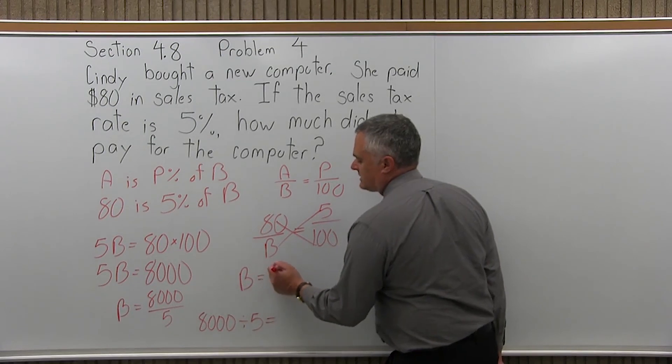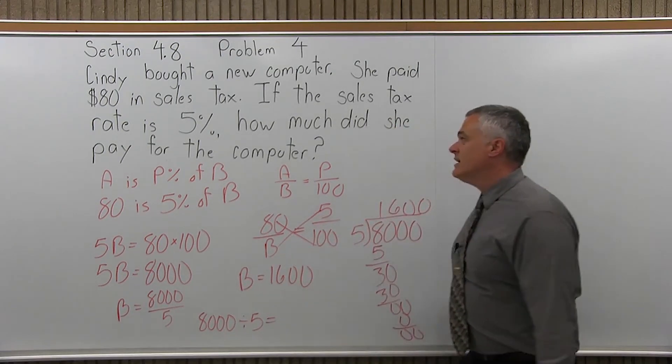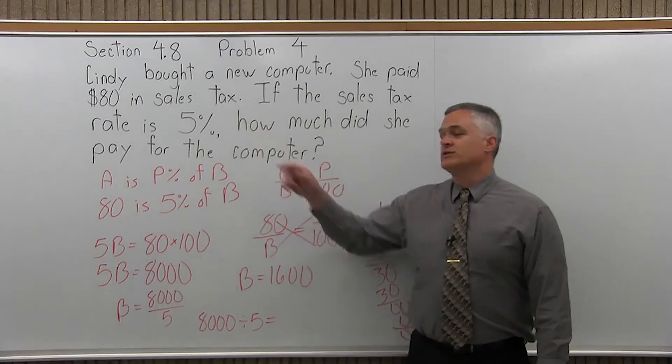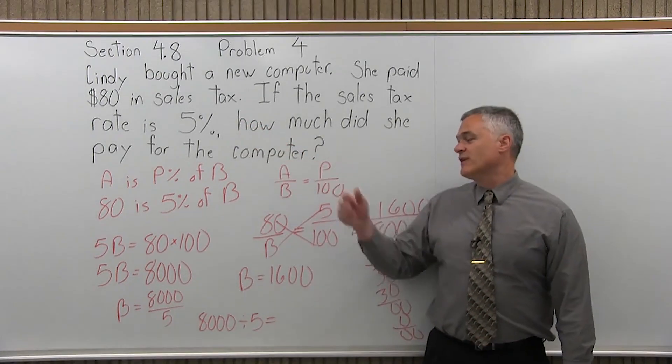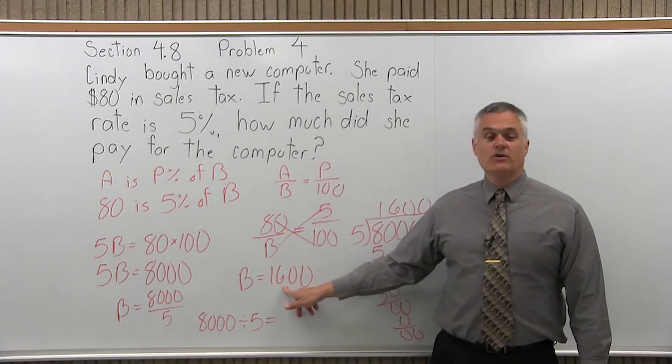B is 1,600. So what does that mean? That means that if Cindy paid $80 in sales tax and the tax rate is 5%, then the computer she bought costs $1,600.